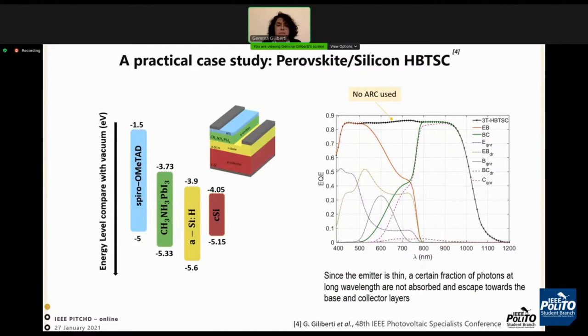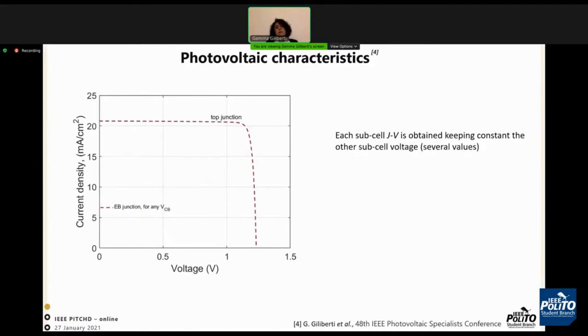In this slide, we can observe the external quantum efficiency that is decreased due to the fact that we have not used an anti-reflection layer. Also, since the emitter is thin, a certain fraction of photons at long wavelength are not absorbed and escape towards the base and collector layers.